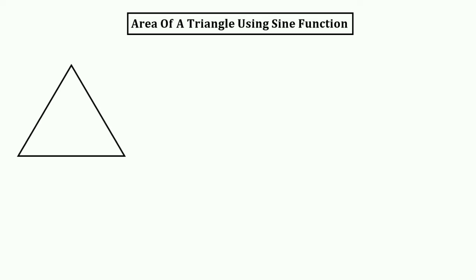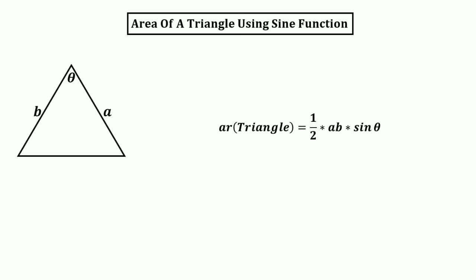We will solve this amazingly hard question using only one formula: the area of a triangle using the sine function. If a triangle has an angle θ with adjacent sides a and b, then its area equals ½·ab·sin(θ). This is the only formula we will use.